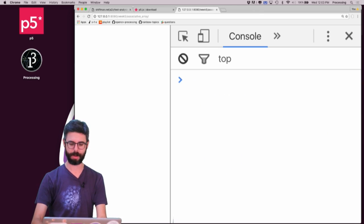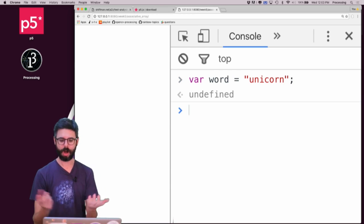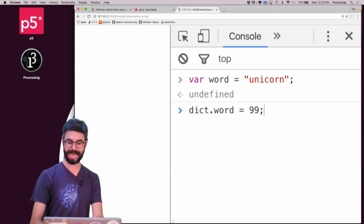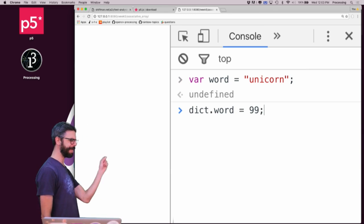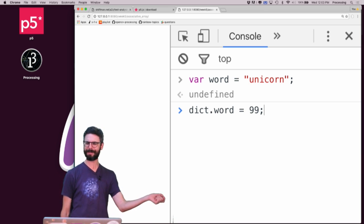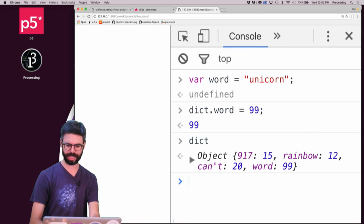Now let me talk about what I mean by a variable. Let's say I say var word equals, did I do unicorn yet? I don't think so. Var word equals unicorn. Well, what happens if I say dictionary dot word equals 99, right? What's going to be in there? Is it going to be 99 associated with the string unicorn? Or is it going to be 99 associated with something called word? Let's see what happens. Okay, now if I look at dictionary.